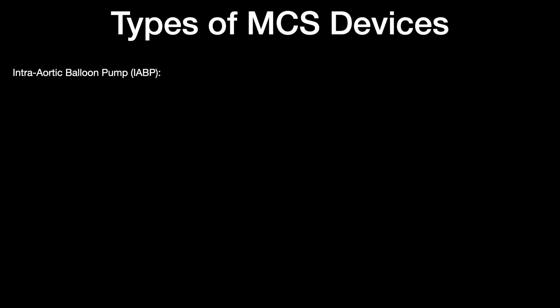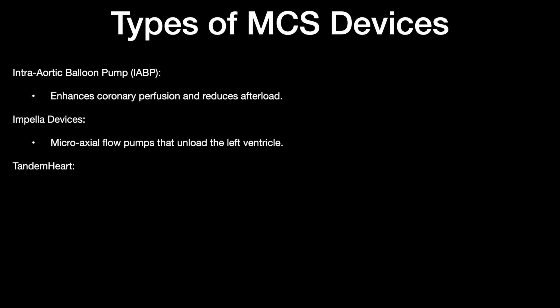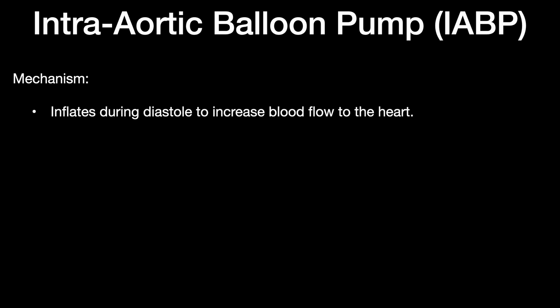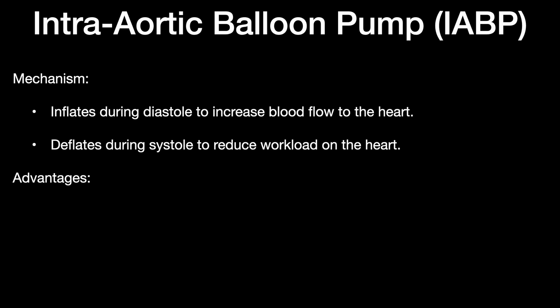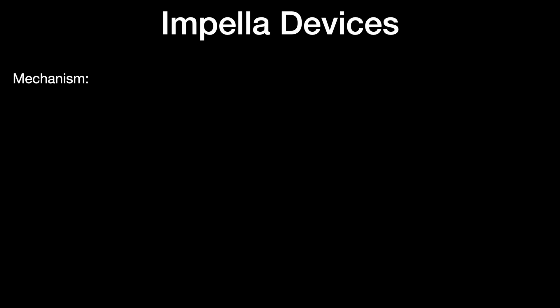The types of mechanical circulatory support devices: the most common and oldest is the intra-aortic balloon pump (IABP), which enhances coronary perfusion and reduces afterload. It inflates during diastole to increase blood flow to the heart and deflates during systole to reduce workload. The advantage is that it is cost-effective and easy to insert. The limitation is no significant benefit in clinical trials, so it is less commonly used unless there are mechanical complications.